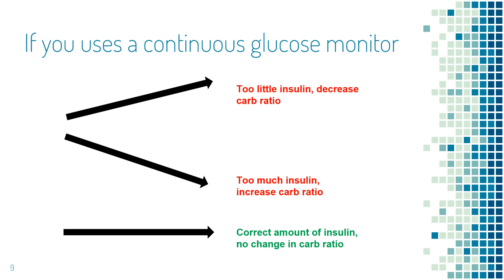If you use a continuous glucose monitor, the whole process is even more intuitive. Look at the blood sugar line from before the meal to four hours after the meal. If the line goes up, you need more insulin — reduce carb ratio. If the line goes down, you need less insulin — increase carb ratio. The target is to keep the line as flat as possible.